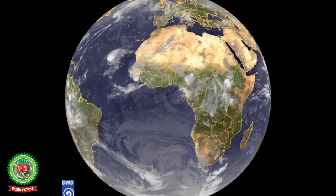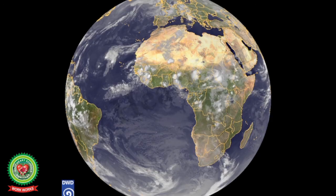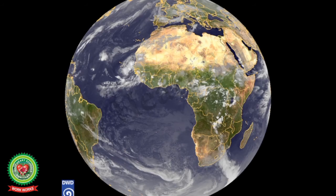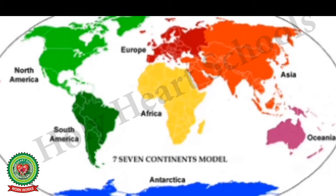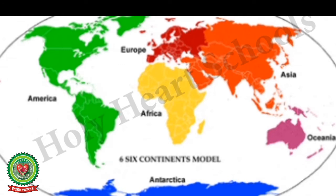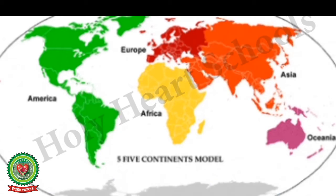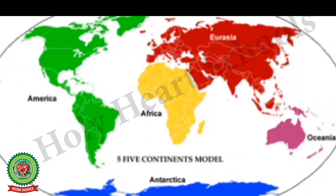This is our planet Earth — the planet where we live. Continents are the huge land masses found on the earth. The earth has seven continents; from largest to smallest, these are: Asia, Africa, North America, South America, Antarctica, Europe, and Australia. Today we will discuss Europe's political division and physical features.